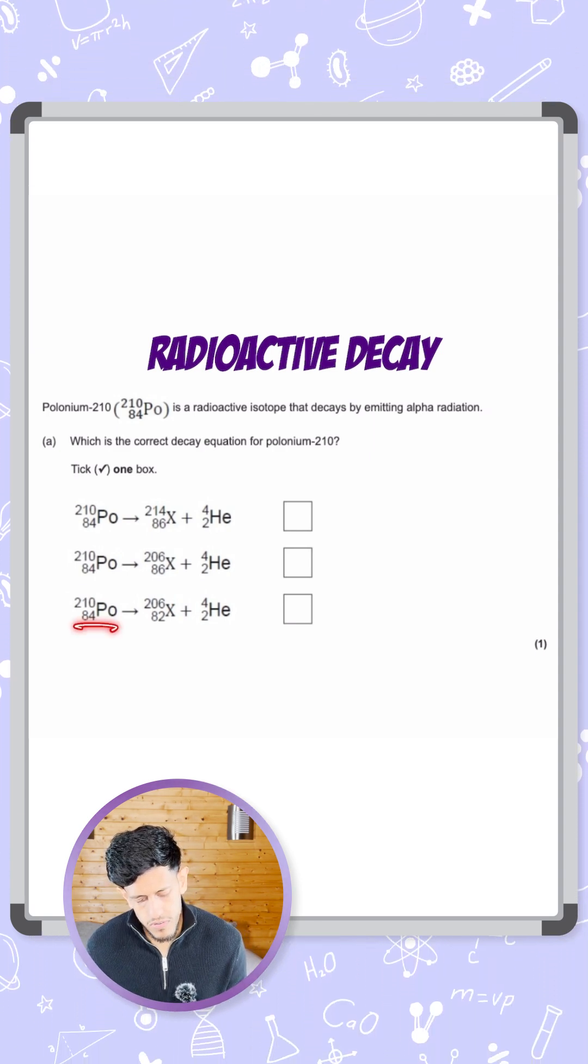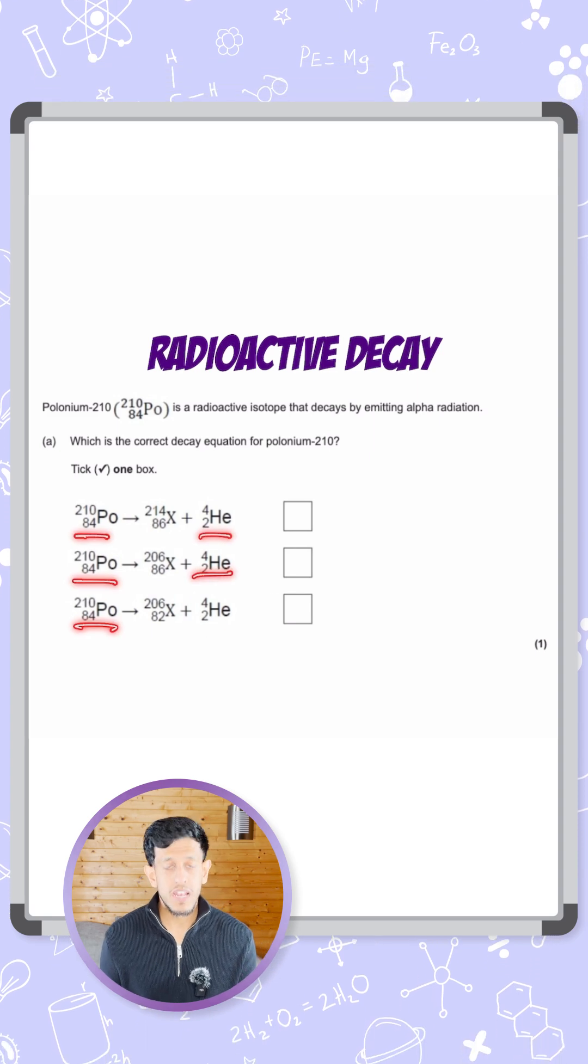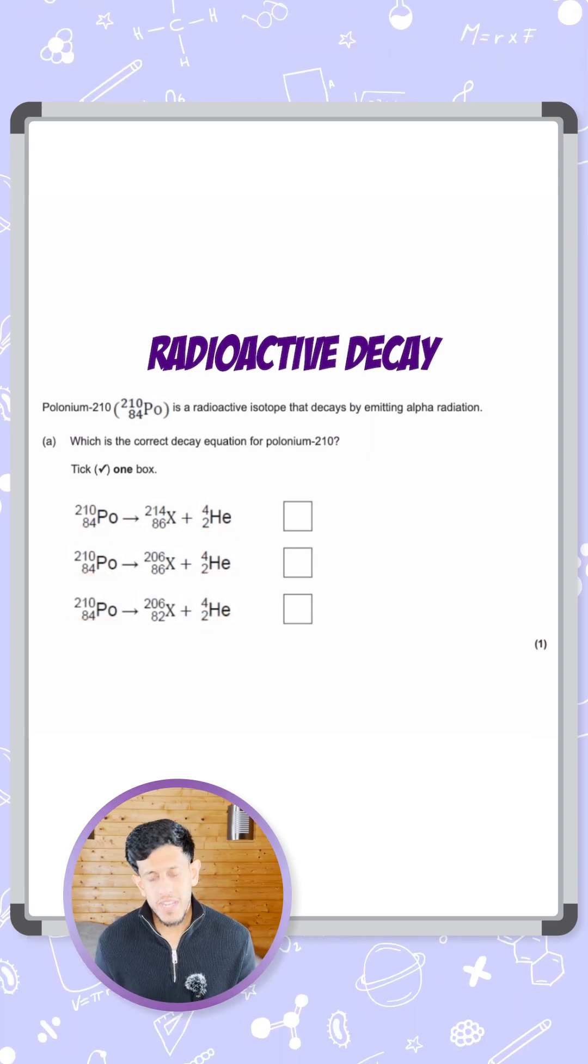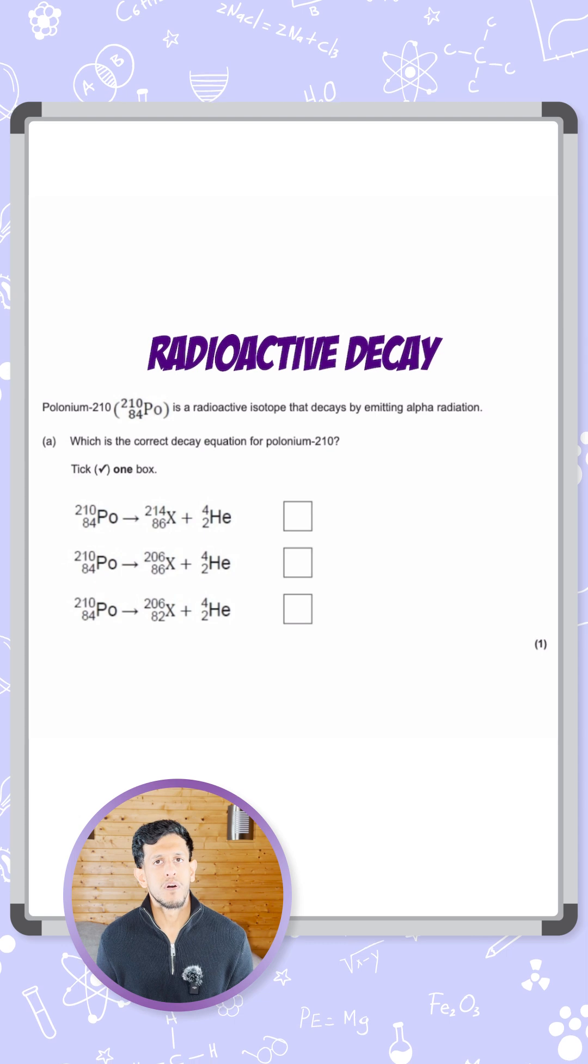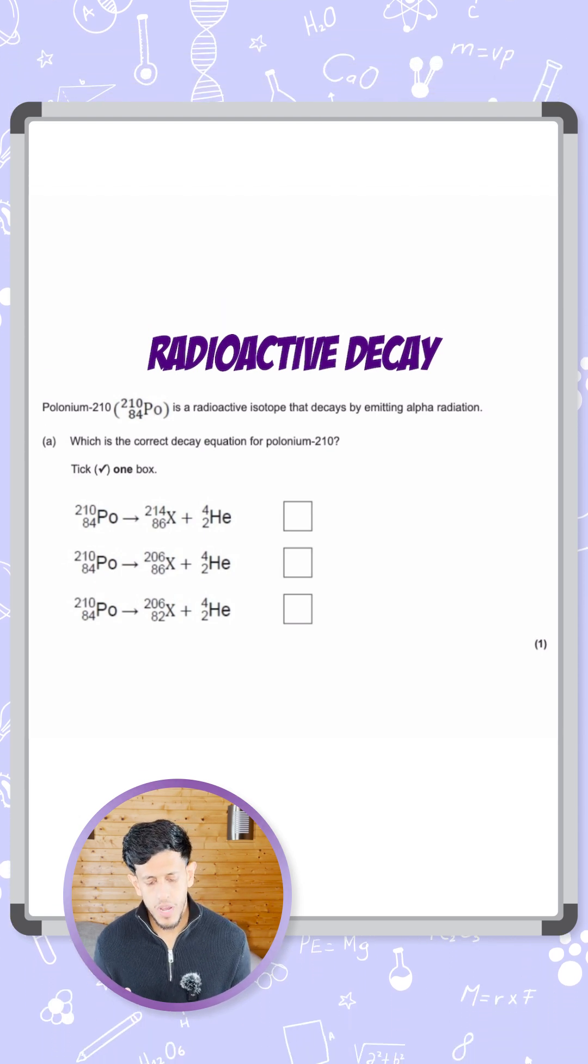So we know these two sides are all the same, so it's more focused on element X. And what we need to make sure is atomic number and the mass number on both the left and right-hand side of the equation are balanced.